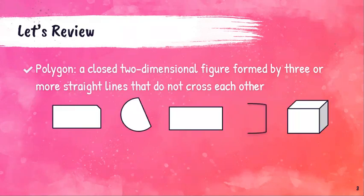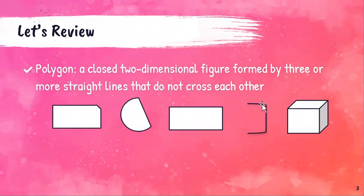Here are some figures and we're going to take apart the definition of a polygon to determine if these are polygons or not. The first part of the definition says a polygon is a closed figure. I can look at this right now and decide that one of these is definitely not a closed figure. You've got a line and a line and a line, but they don't meet up — they're not joined in any way to close the figure. So this is not a polygon, and I'm going to put an X on it.